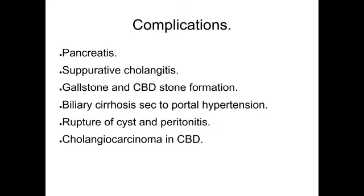Complications of choledochal cyst include pancreatitis — mainly in types 2 and 3 — suppurative cholangitis, gallstone and CBD stone formation, biliary cirrhosis secondary to portal hypertension, rupture of cysts and peritonitis, and cholangiocarcinoma in CBD in 30% of cases. The incidence of malignancy increases with age and is more common in types 1 and 5.